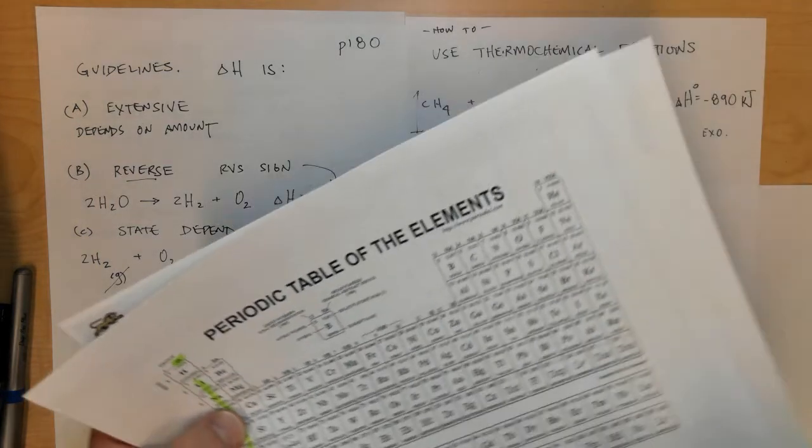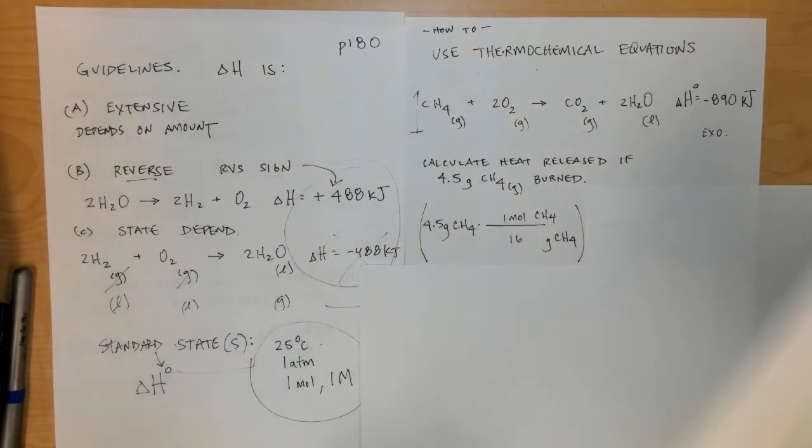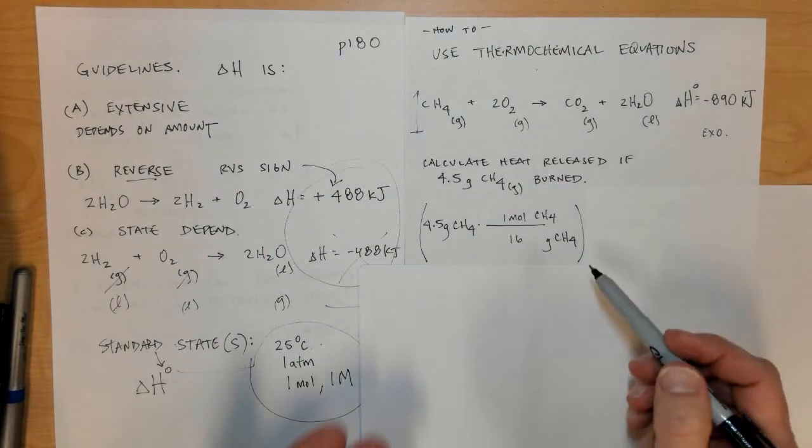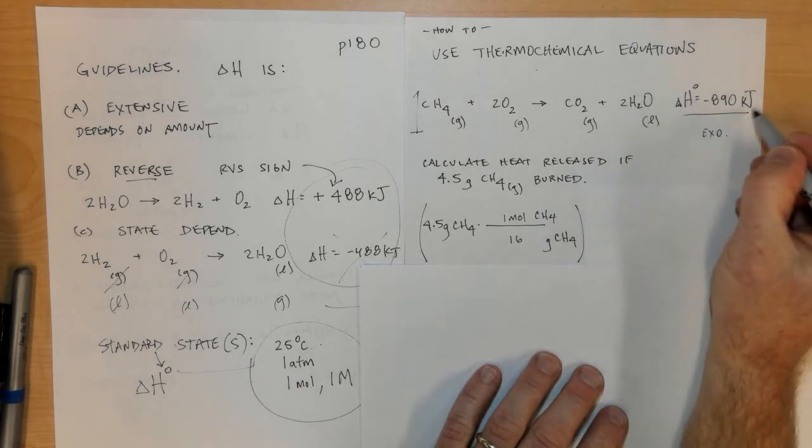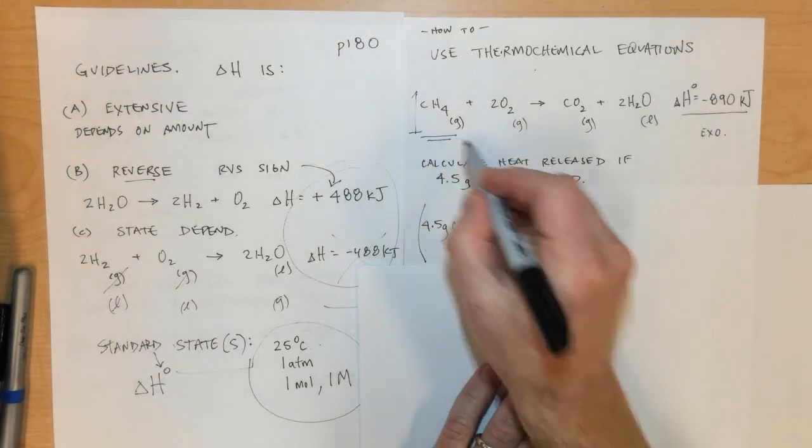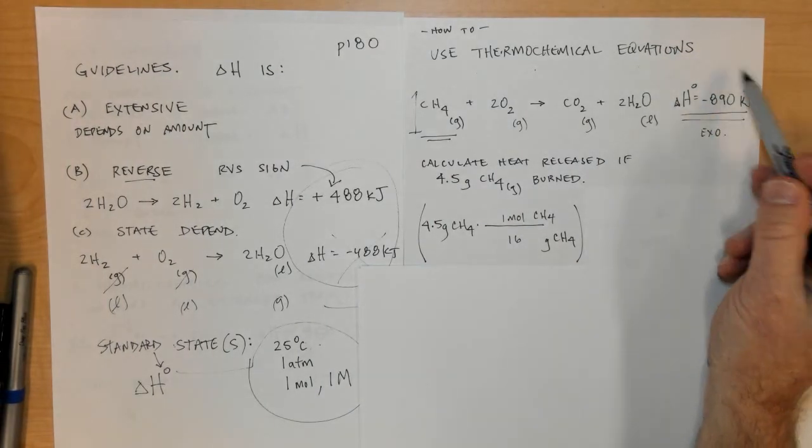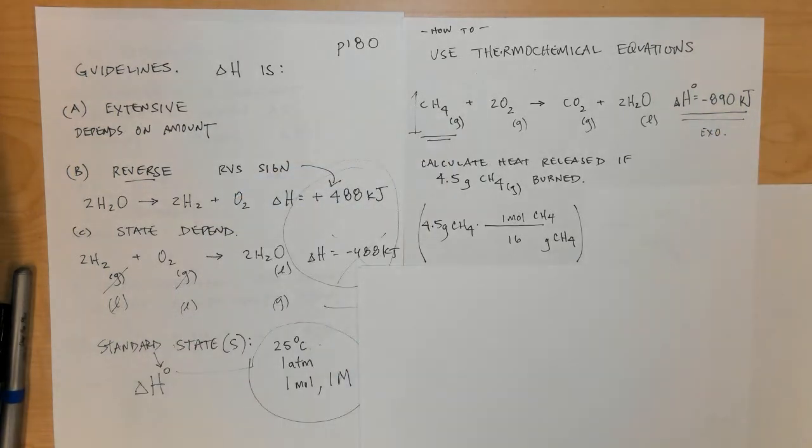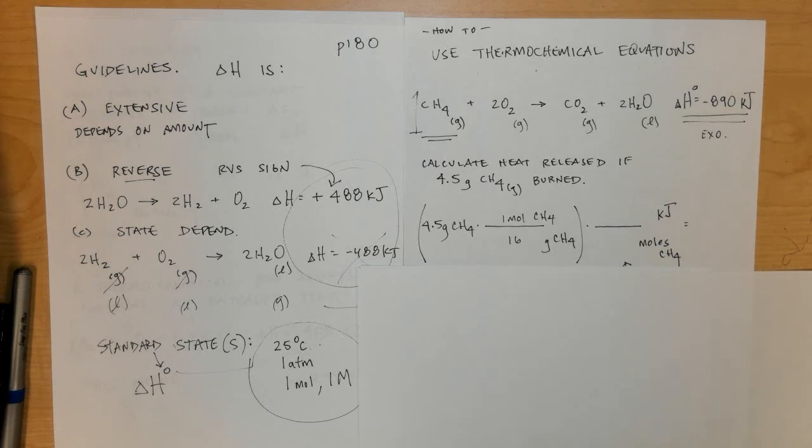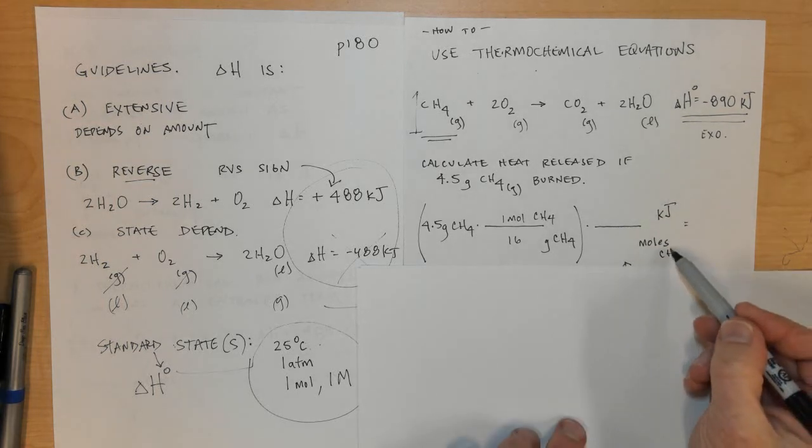Once I've converted to moles, now I can use the ratio between methane and the delta H or enthalpy term in the equation. I can write a fraction or ratio that puts moles in a position where it's going to cancel.